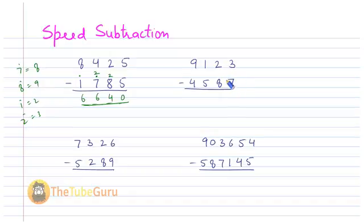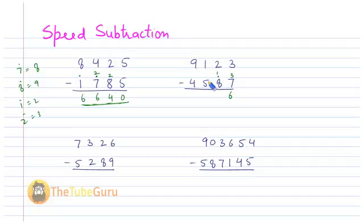Let's see a few more problems. Here I have three minus seven — not possible, so I take the complement of seven, which is three, and put a dot on the next digit. Three plus three is six. Next, two minus nine is not possible, so I take the complement of nine, which is one, and put a dot on the next digit. Two plus one is three.